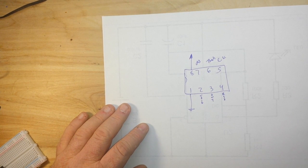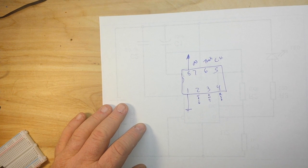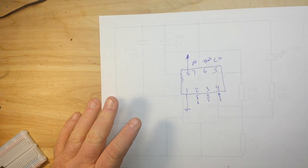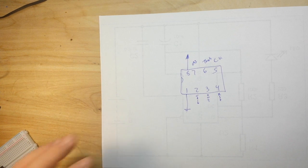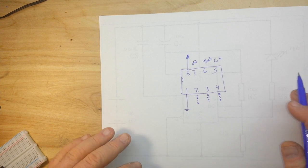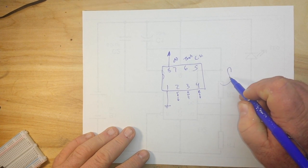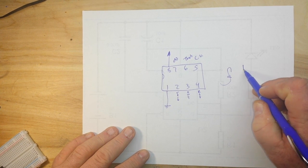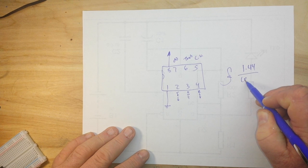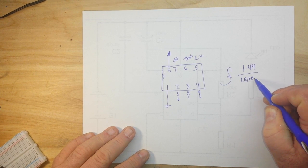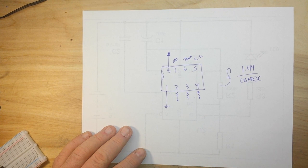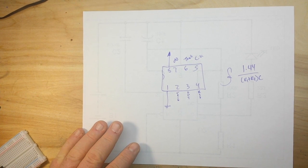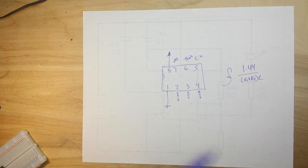So we need to set up our 555 in astable mode so it flip flops back and forth between high and low. How are we going to get the frequency to determine what we want? Well that's pretty simple too. The formula for frequency is 1.44 over R1 plus R2 times C. That's it. That's the formula. Now, let's set this up with the least number of components as possible. The KISS method.